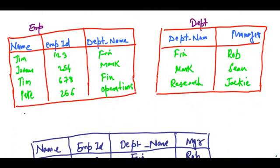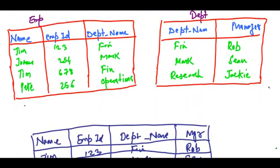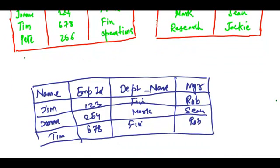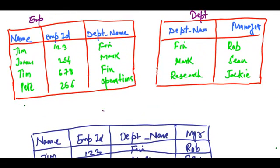Let's take a look at this table. We have the employee table and the department table. I have just added two more entries, one each in this table. I have added Pete with employee ID 256, department name operations. And I have added a new manager, Jackie, who is the manager of research. And this is my employee natural join department.